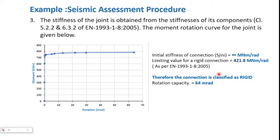We proceed to step 3 of the assessment procedure: classification of the stiffness of the connection. The initial stiffness of the connection works out to be almost infinity — the M-φ curve is almost vertical in the beginning. As per EN1993-1-8, the limiting value for a rigid connection for a 6 m span beam is worked out to be 421.8 MNm/rad. Accordingly, we can classify the design connection as a rigid connection. The calculation also shows that the connection has a rotation capacity of 64 mrad.